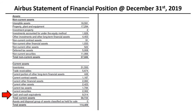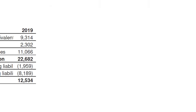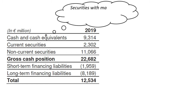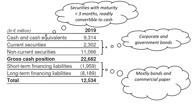Cash and cash equivalents of 9 billion euros is the most liquid asset and an important line item to review. However, cash and cash equivalents is best viewed in a broader context, together with non-current and current securities and long-term and short-term financing liabilities — adding up to a net cash position of 12.5 billion euros. Cash is the amount the company has in the bank; cash equivalents are securities with a maturity date of less than three months, readily convertible to known amounts of cash, and subject to an insignificant risk of changes in value. Current and non-current securities at Airbus consist of a portfolio of corporate and government bonds. Short-term and long-term financing liabilities consist mostly of bonds and commercial papers issued by Airbus, and lease liabilities.